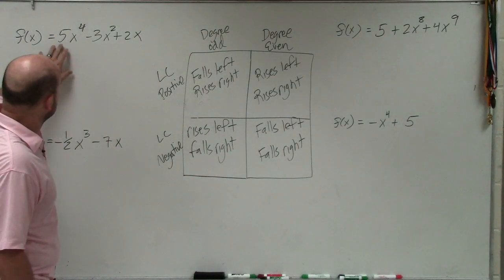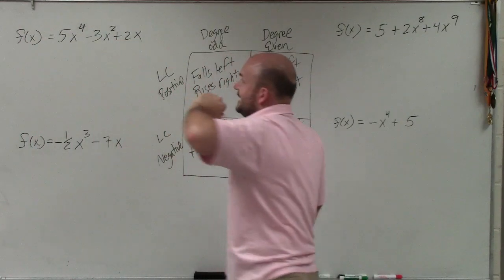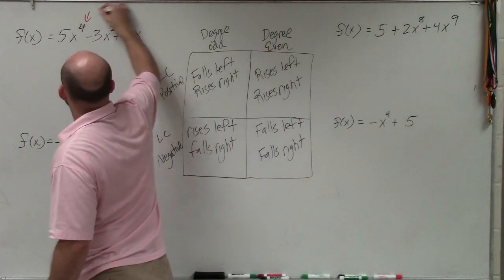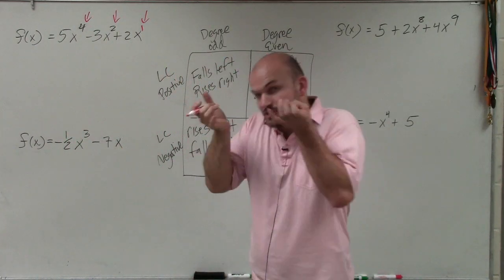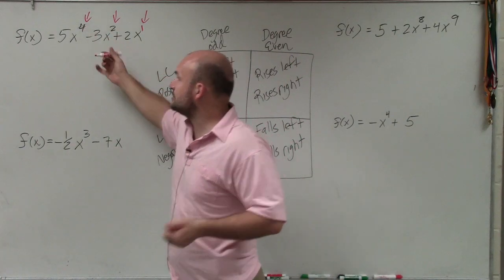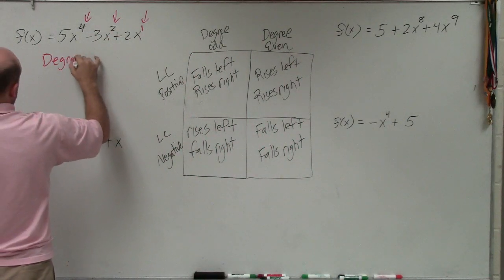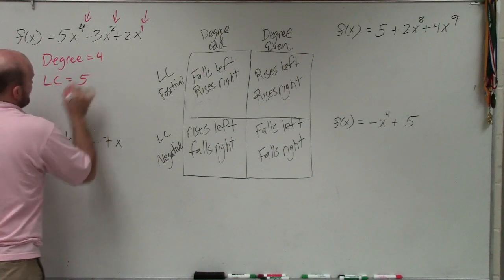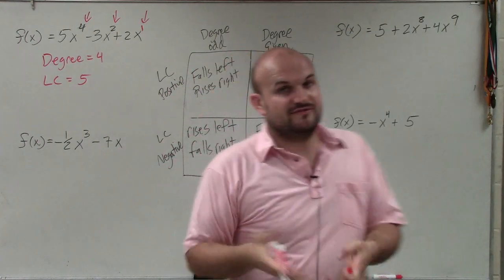The first example is 5x to the fourth minus 3x squared plus 2x. The powers are in descending order, which is good. The largest power gives us our degree, which is 4, and the leading coefficient is 5. So I have a degree of 4 and a leading coefficient of 5.